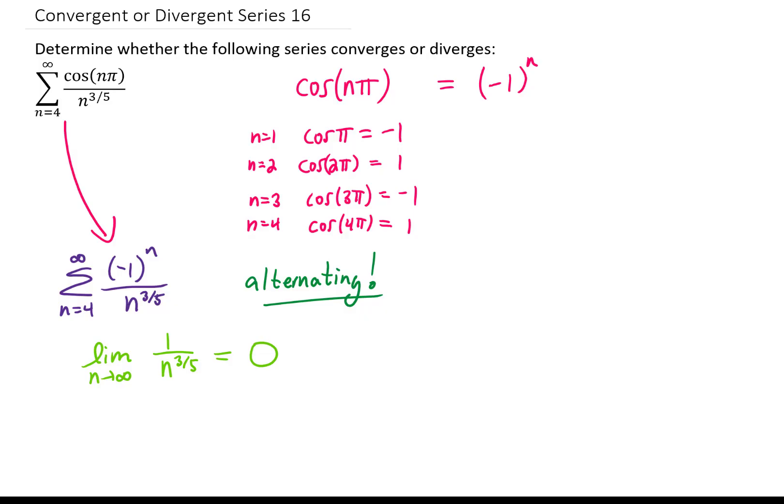Because our series is alternating, and because the limit of the term inside of the series goes to 0, that's all we need to know. Our series converges by the alternating series test.